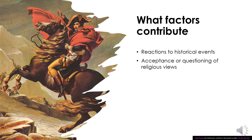We also see that sometimes these factors come about by the acceptance or questioning of religious views. For example, some stained glass windows are celebrations of the current religious views in practice by a certain people. Or some works of art come about because people questioned certain religious views — for example, Pilgrim's Progress was written as an allegory, as a way to question the status quo of religion in England.